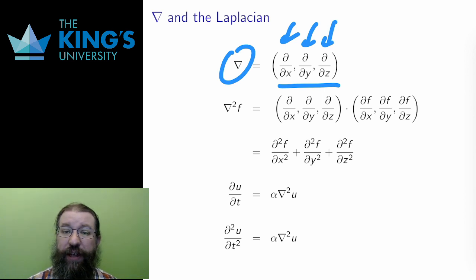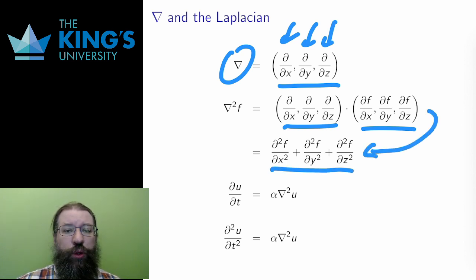Since this is a vector, a vector of operators, but still a vector, I can take the dot product. What happens here? If I take such a dot product and apply it to a function, I get the sum of each of the pure second partials. This is called the Laplacian of the function, and it is written this way, nabla squared.